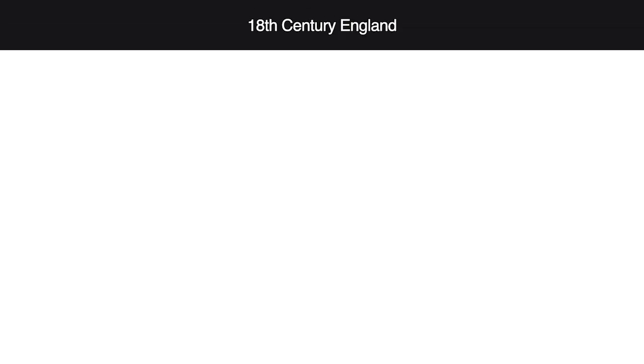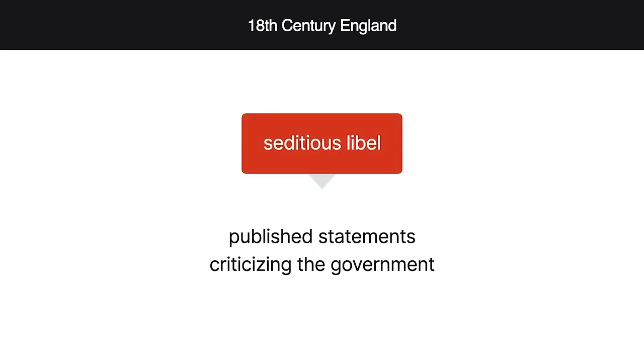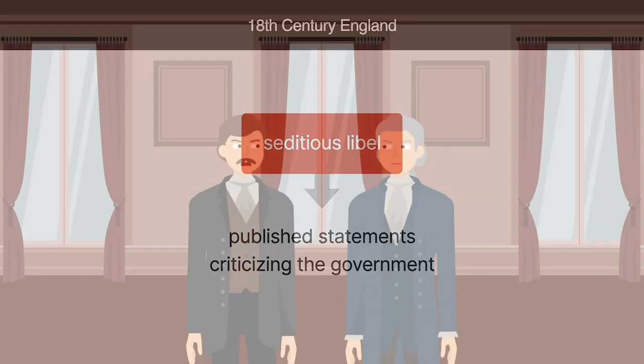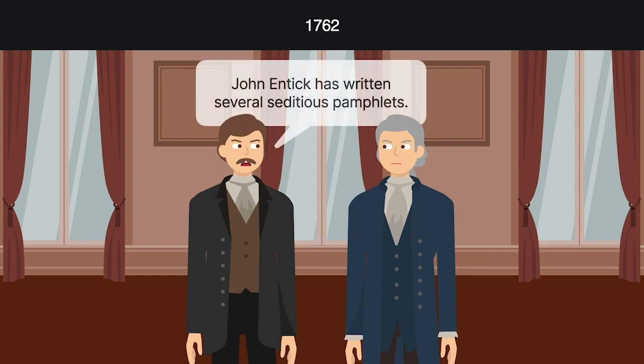In 18th century England, a person who published statements criticizing the government committed the crime of seditious libel. In 1762, an informant claimed that author John Entick had written several seditious pamphlets.